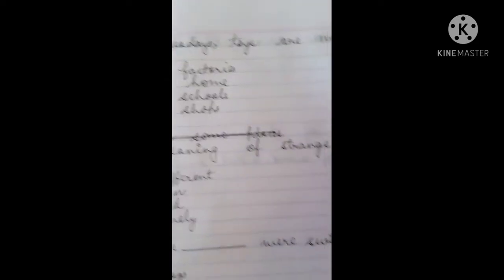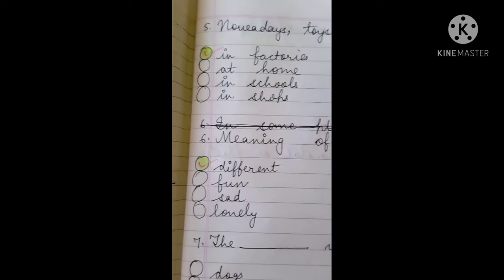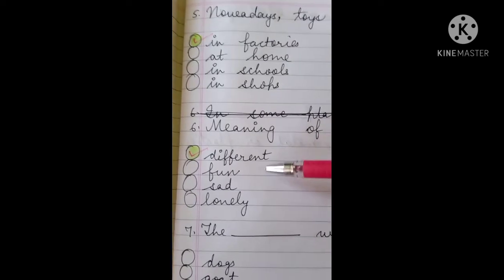Next is nowadays toys are mostly made where? In factories. Meaning of strange is different.